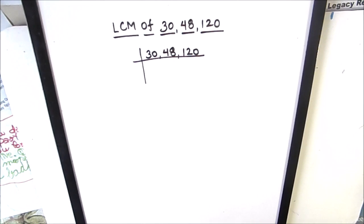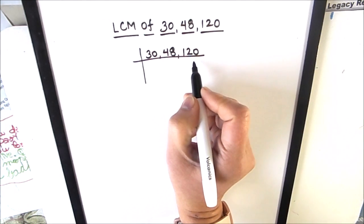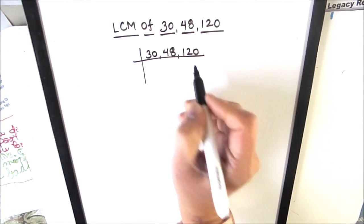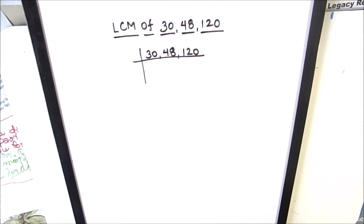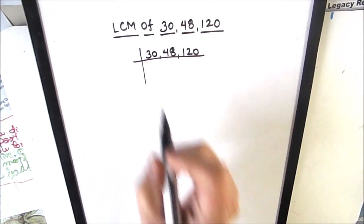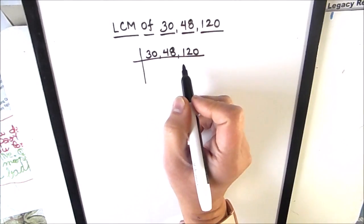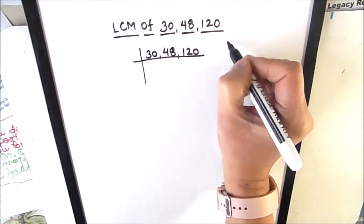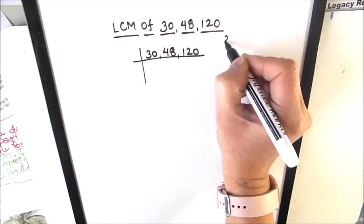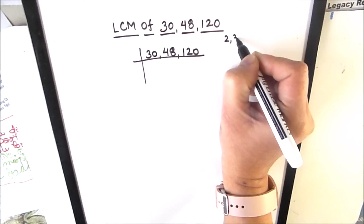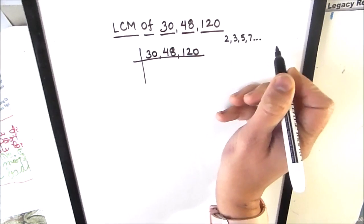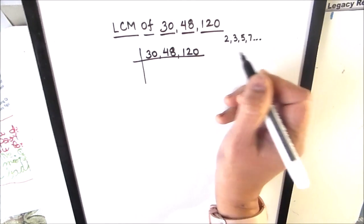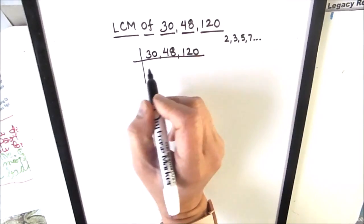Hello students. In this video we are going to learn how to find the LCM of 30, 48, and 120 using prime factorization. In this method we divide numbers by prime numbers and find the factors of the number. The first few prime numbers are 2, 3, 5, 7, and so on.